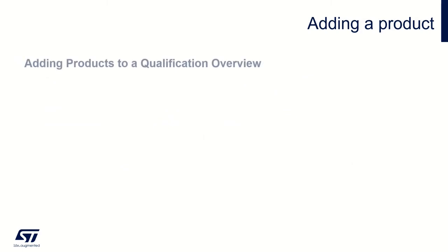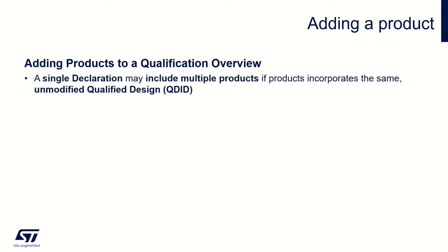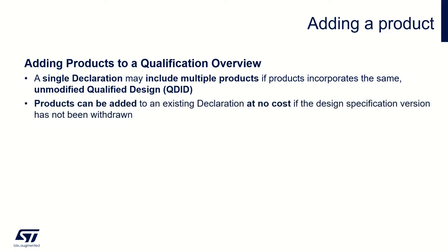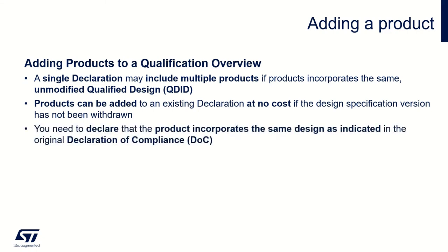When adding products to the qualification, a single declaration may include multiple products if they incorporate the same and unmodified qualified design. Products can be added to an existing declaration at no cost, as long as the specification version of the design hasn't been withdrawn. When adding new products to the product list in Launch Studio, you will be required to declare that the product incorporates the same design as indicated in the original declaration of compliance.